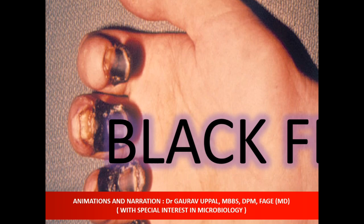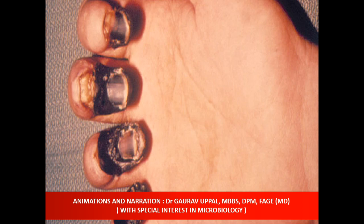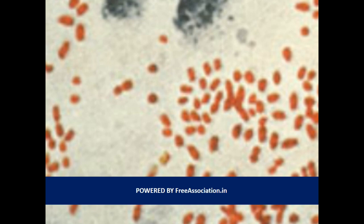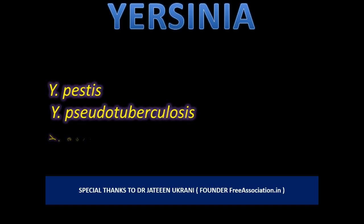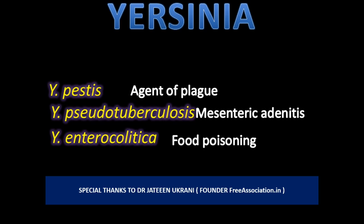They are responsible for causing black fever. These organisms can cause plague. They are called Yersinia. They have three subtypes: Yersinia pestis, Yersinia pseudotuberculosis, and Yersinia enterocolitica.